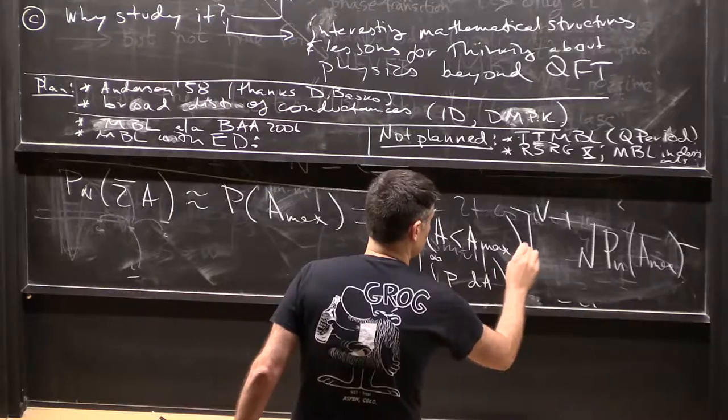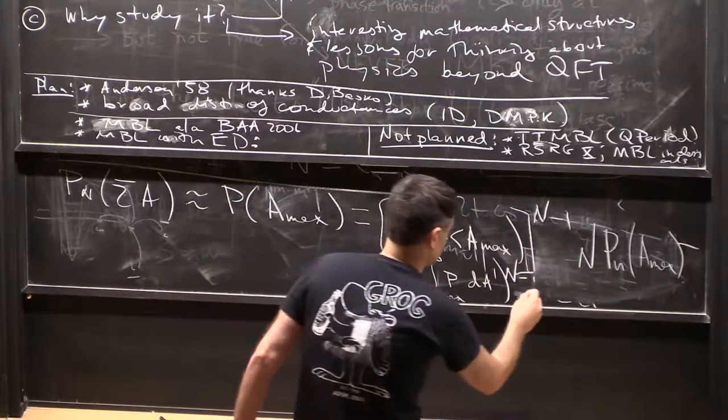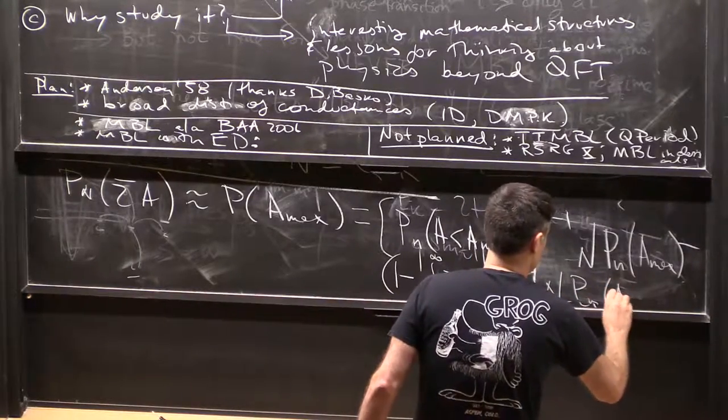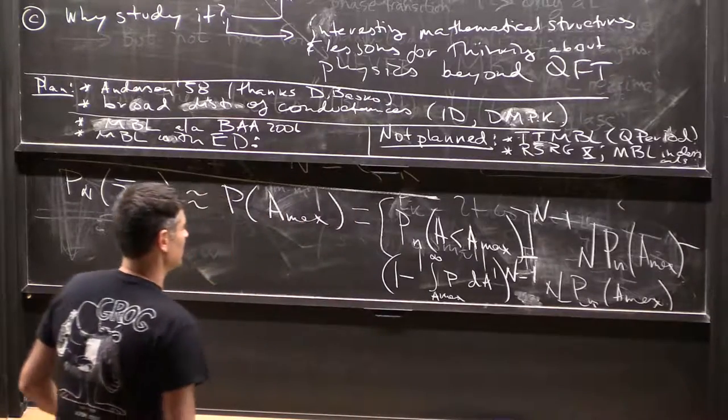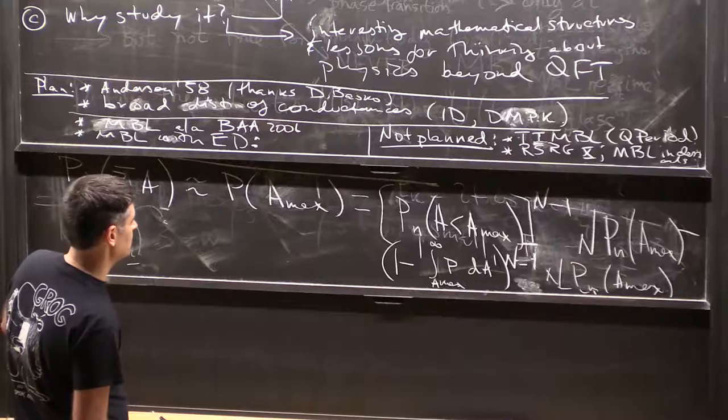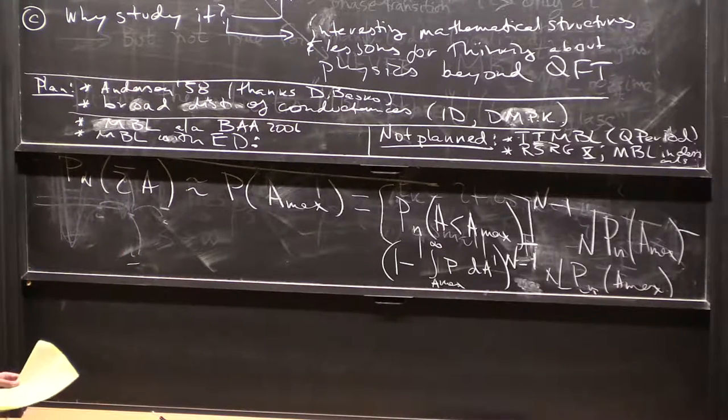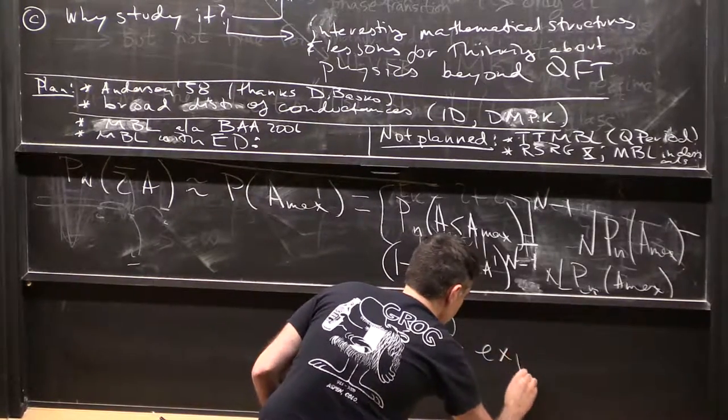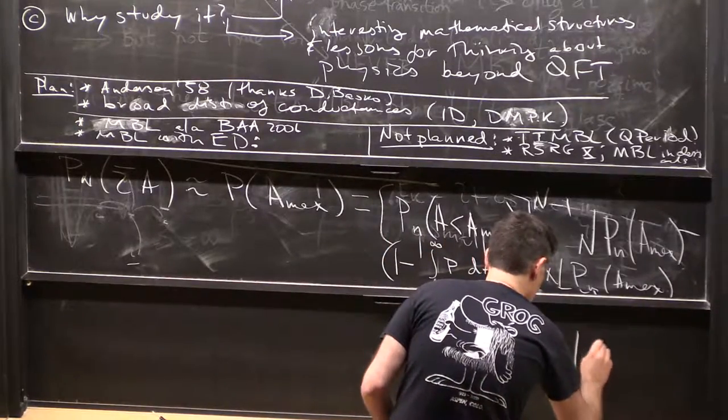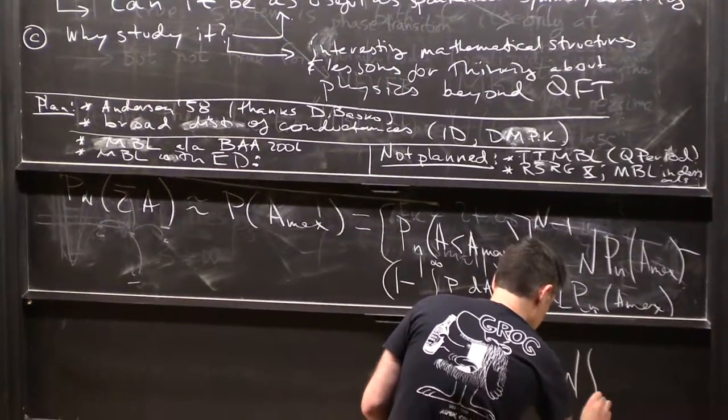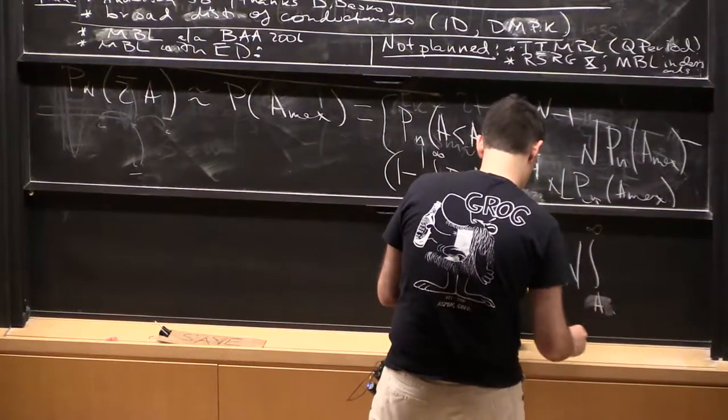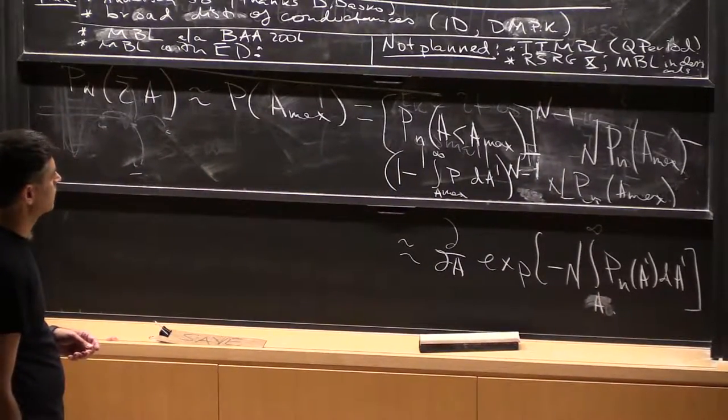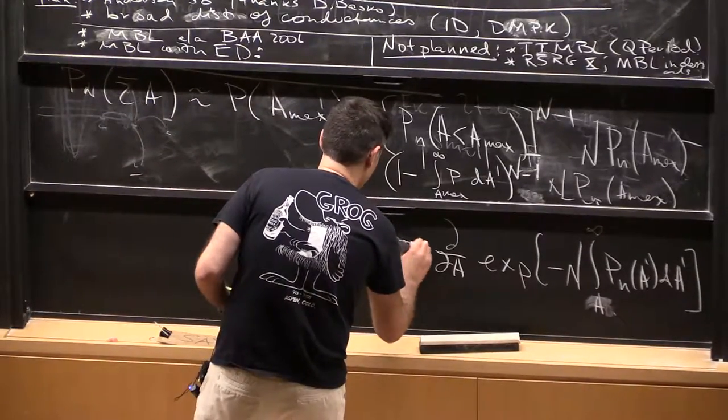Does that say a minus 1 or n minus 1? N. That was a goof. P_n a_max. This is of course d by da of an exponential—no no wrong—infinity to a_max of p_n a prime d a prime. Actually this is exact. This is the approximation.